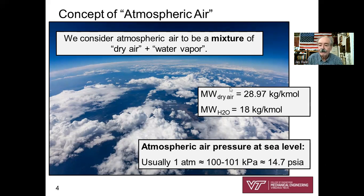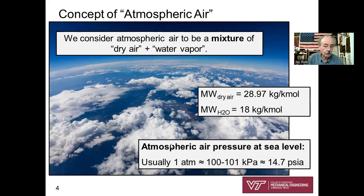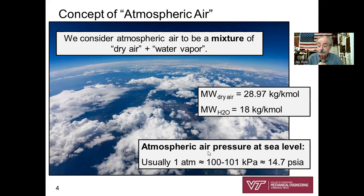The molecular weight of dry air is 28.97 kilograms per kilomole, and the molecular weight of H₂O water is 18 kilograms per kilomole. Atmospheric air pressure at sea level and most reasonable elevations is about one atmosphere, which is 100 to 101 kPa, or about 14.7 pounds per square inch absolute pressure.